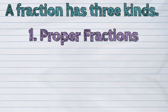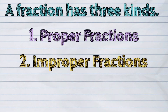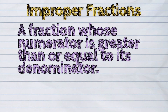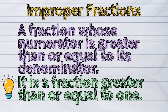The next kind of fraction is the improper fraction. An improper fraction is a fraction whose numerator is greater than or equal to its denominator. It is a fraction greater than or equal to one.